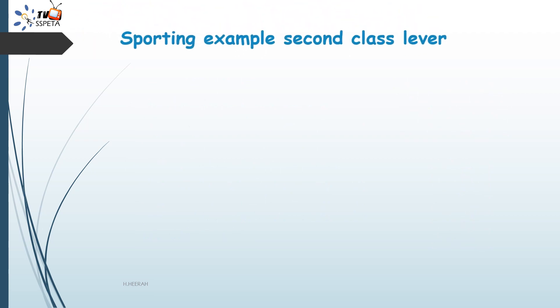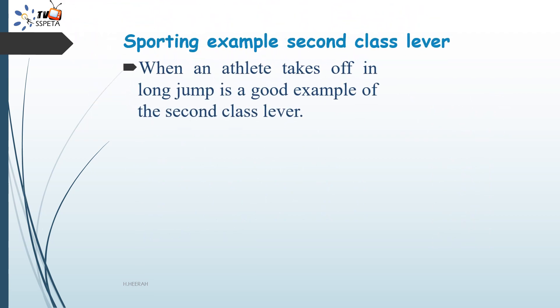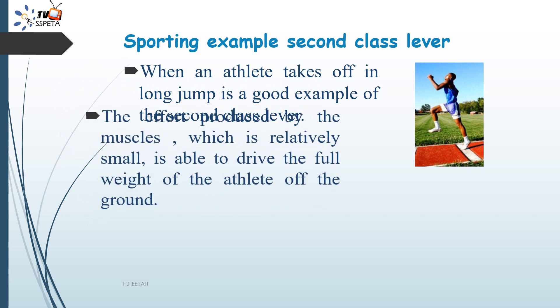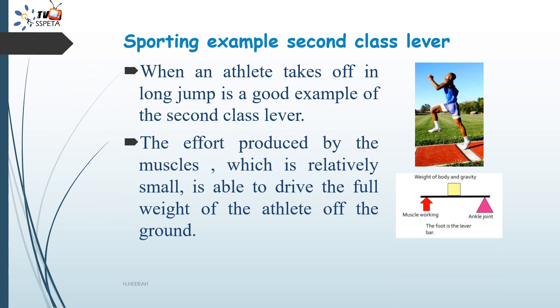A sporting example of a second class lever: when an athlete takes off in the long jump, the effort produced by the muscles — which is relatively small — is able to drive the full weight of the athlete off the ground.